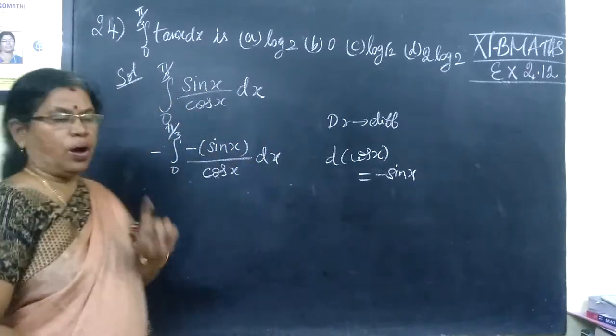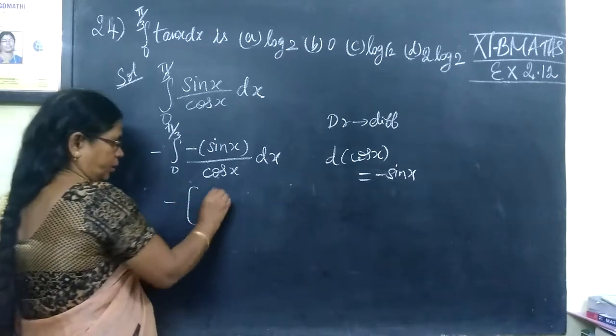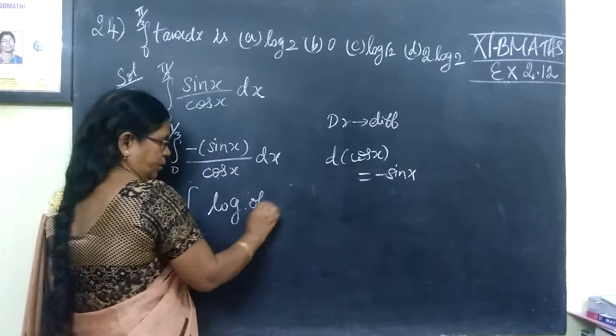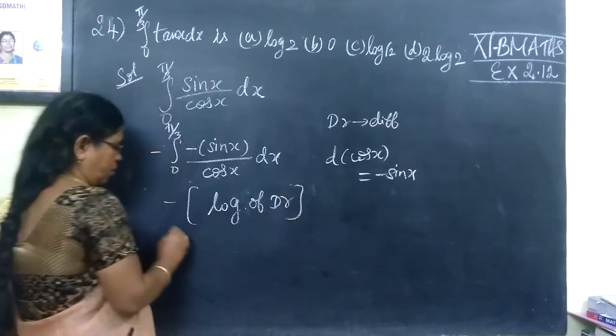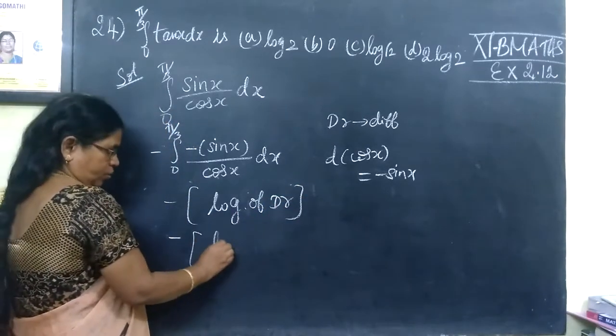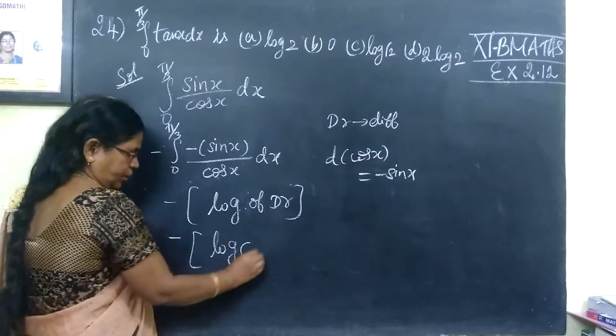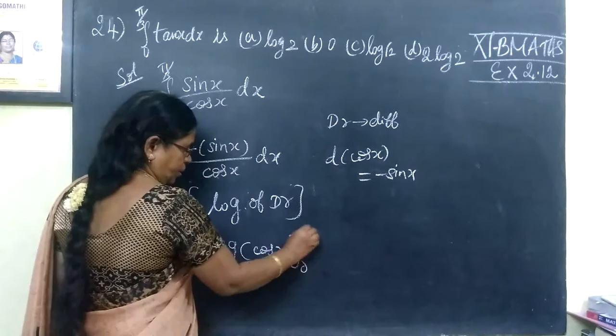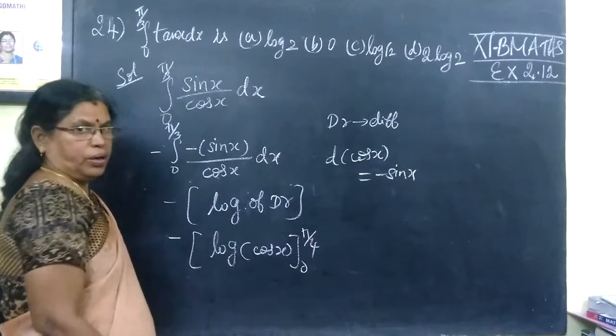You can write this in the form of log of denominator. So log of cos x, with this limit 0 to 5π/3.